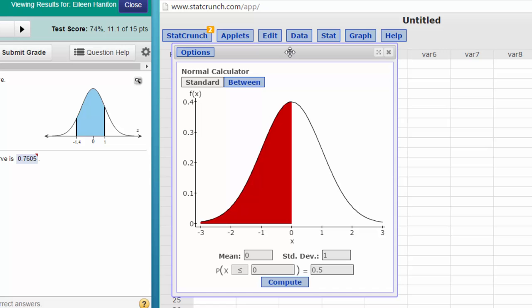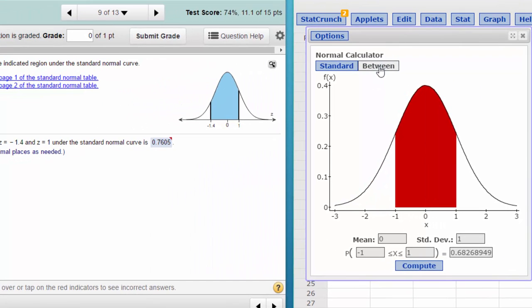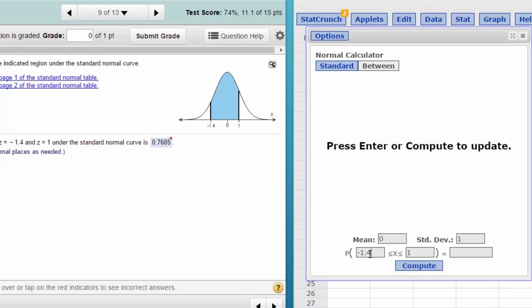In this case we want to click on the Between tab and we get our standard normal curve. On our curve, the area is shown in red. We need to change our lower limit from minus 1 to minus 1.4.